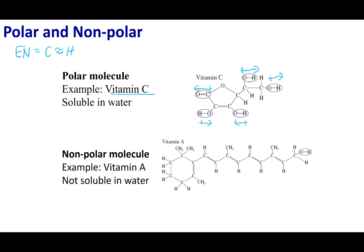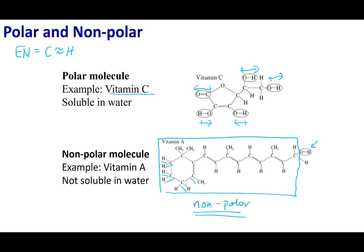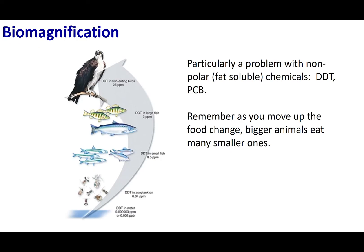Now let's take a look at vitamin A. You'll see it has all these CH bonds, which means the bulk of this molecule is non-polar. It does have a little dipole at the end, but it is dwarfed by the non-polarity of the molecule. So vitamin A is not soluble in water — it is fat soluble. The way you get vitamin A is by consuming plants and animals, where it is stored in their fat. The 'like dissolves like' principle plays a big role in your vitamin uptake.